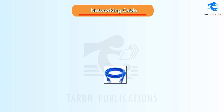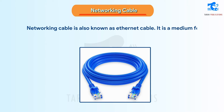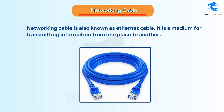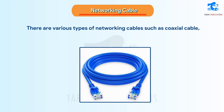Networking Cable: Also known as Ethernet cable, it is a medium for transmitting information from one place to another. There are various types of networking cables such as coaxial cable, twisted pair cable, and optical fiber cable.